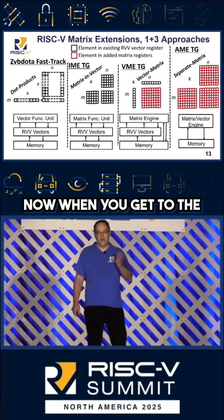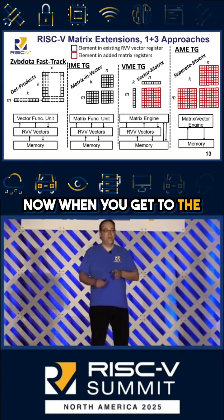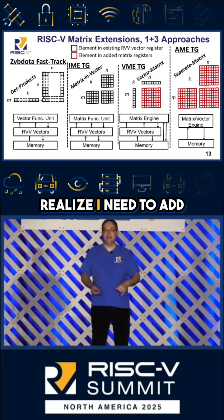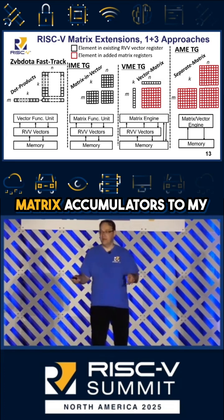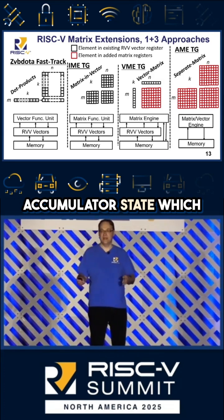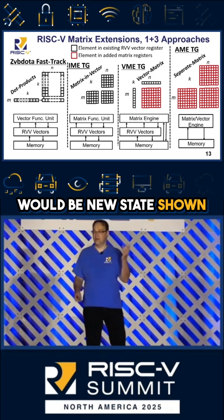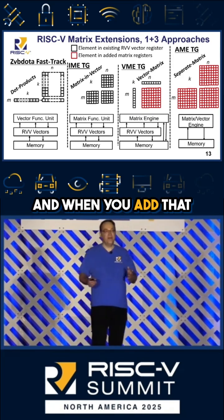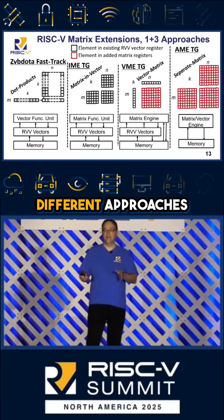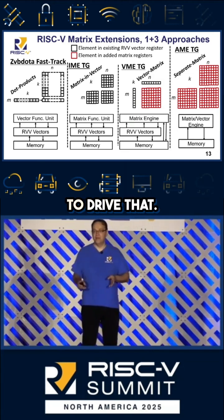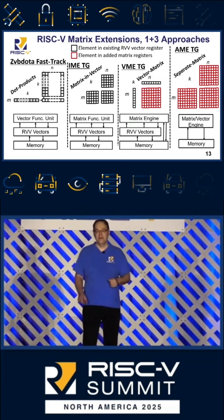When you get to the point of needing very high throughput, you realize you need to add matrix accumulators to your core — a very large matrix accumulator state, which would be new state shown in red on this slide. And when you add that, we're taking two different approaches with two different task groups on how to drive that.